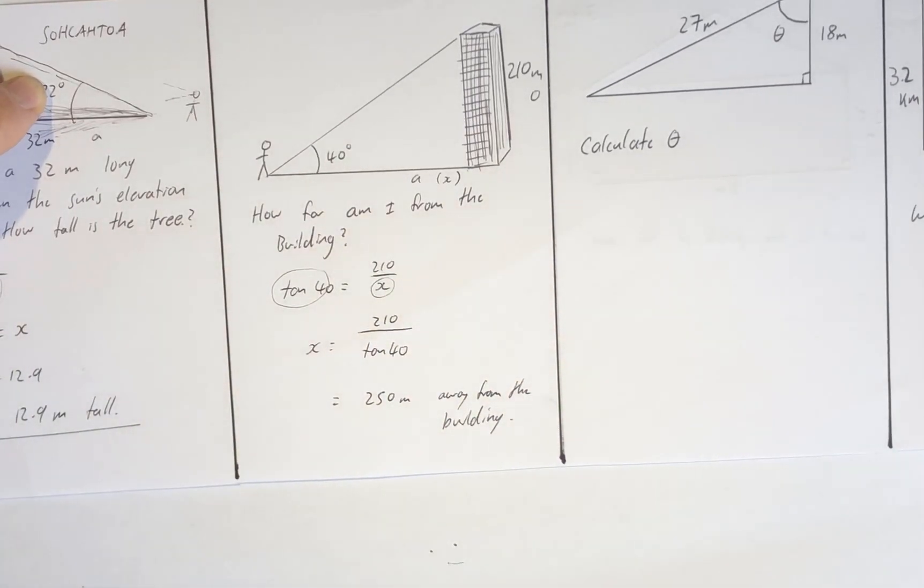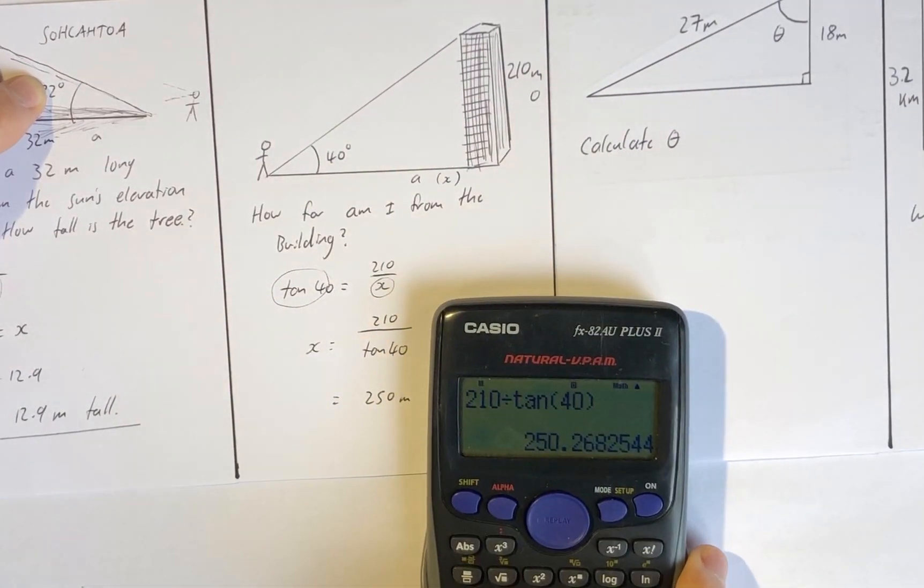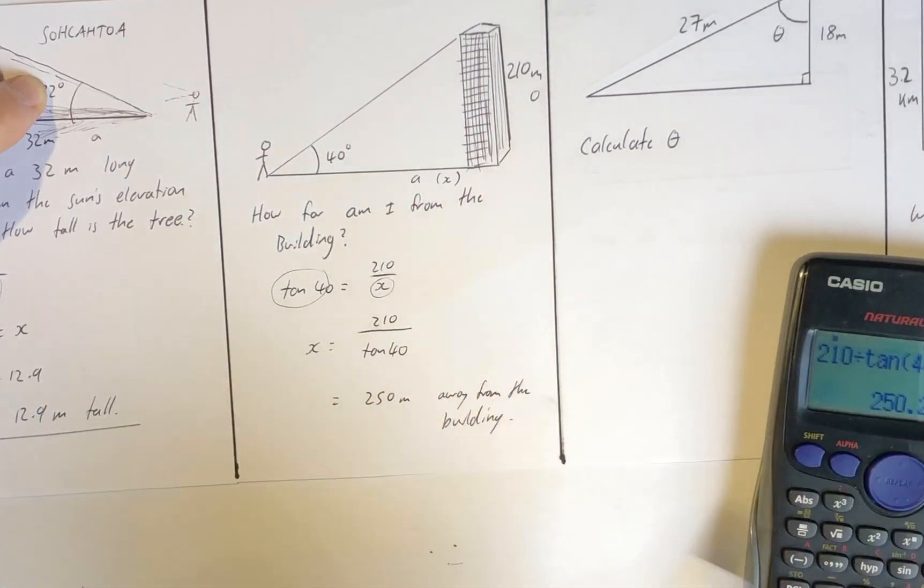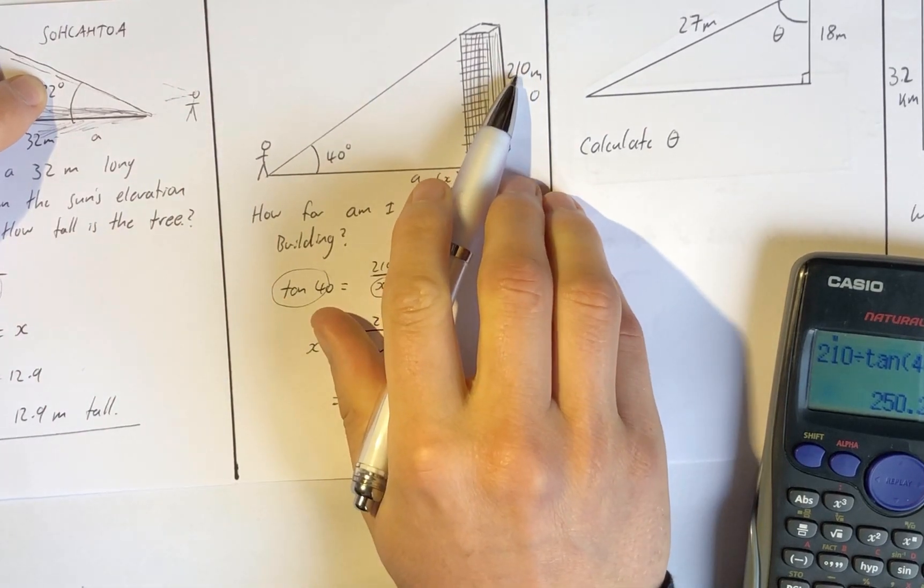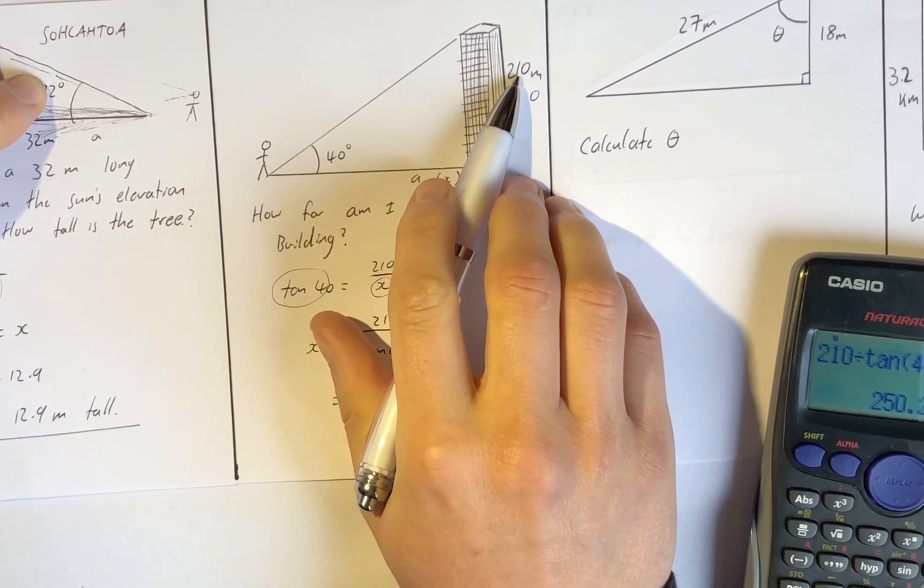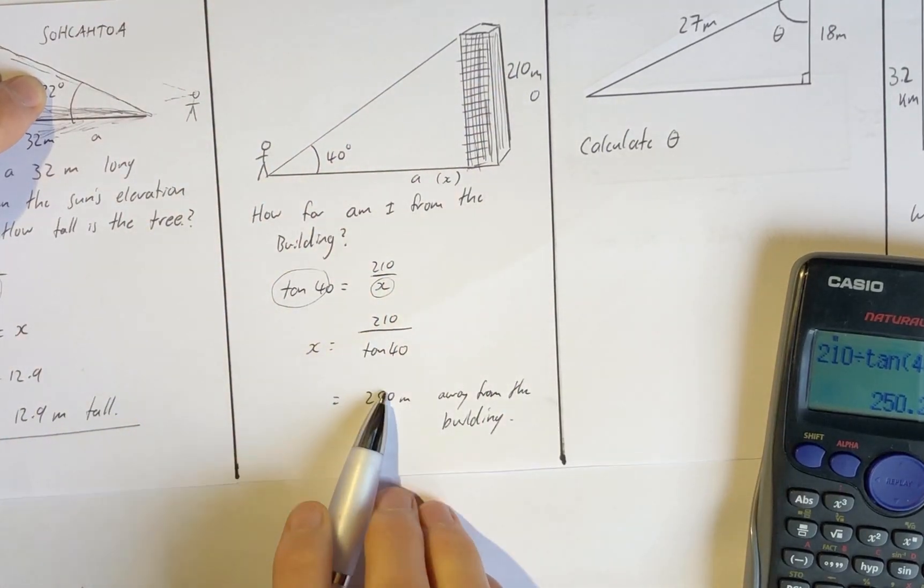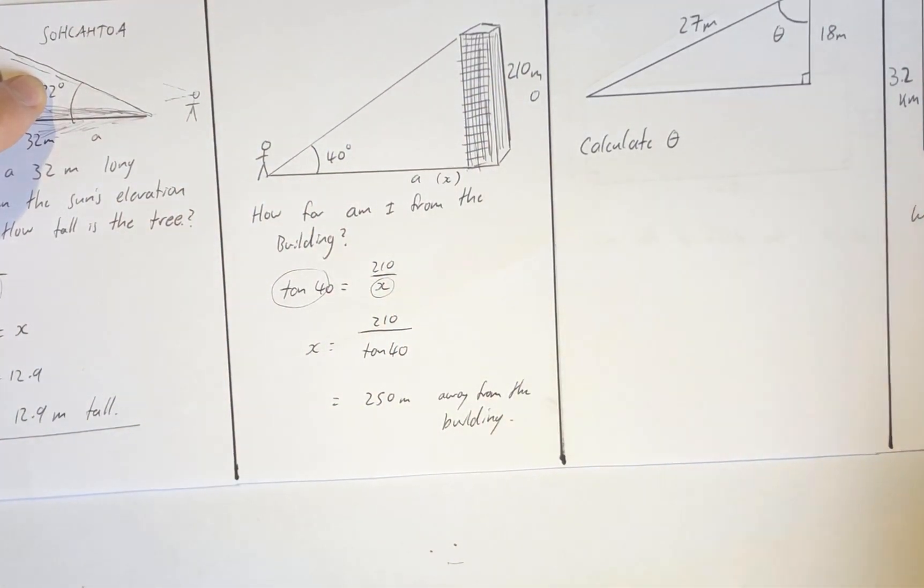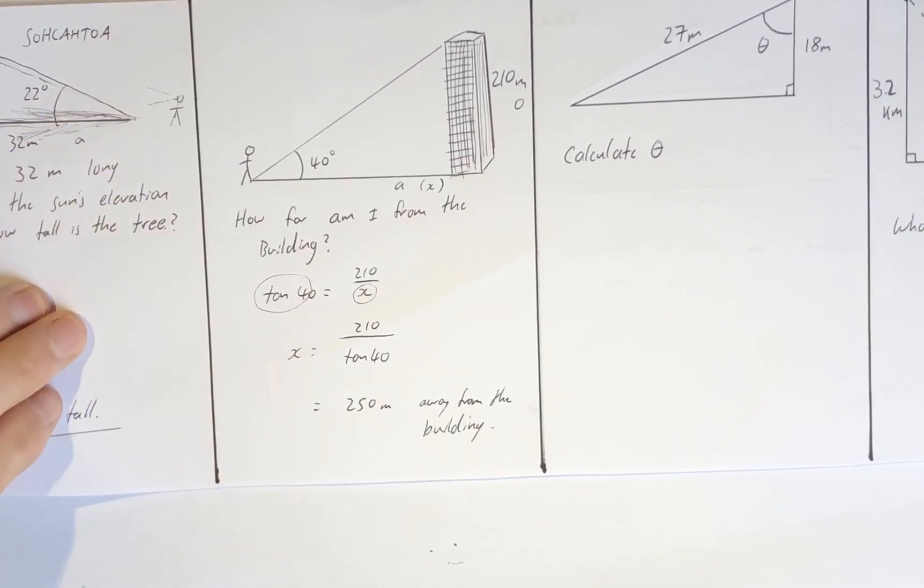250, I'll just call it 250 meters, 250 meters away from the building. The reason I've gone to 250 is because I got 250.3, but I only know that my measurement of the building is rounded to nearest 10, so I'm going to go to nearest 10 for my answer as well, so it's 250 meters.